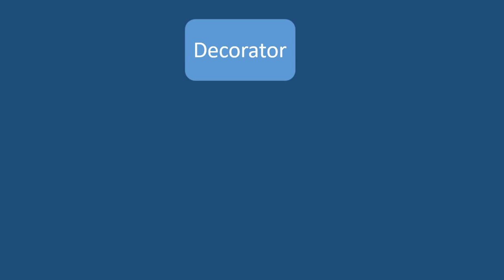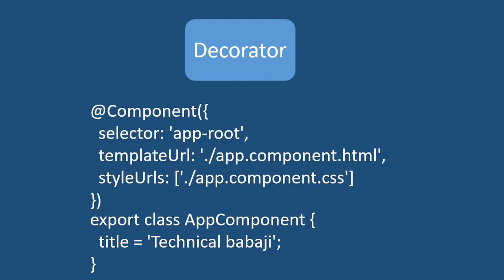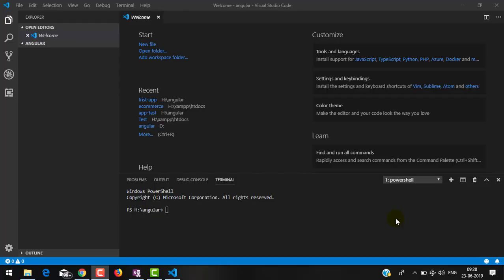Finally, the decorator is provided by Angular. We will use the @Component decorator, which adds additional metadata to the class. Once we add the @Component decorator to a class, that class becomes a component. Now let's see practically what a component is. I am inside Visual Studio Code.